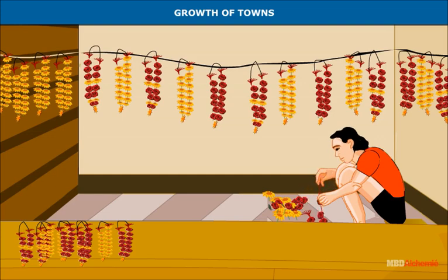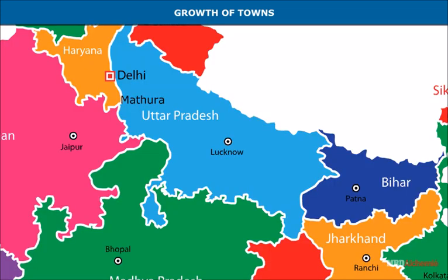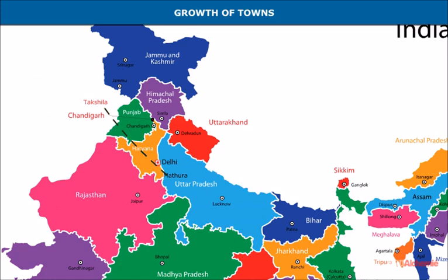Mathura also prospered because of its central location and as a center of sculpture, craft — goldsmiths, blacksmiths, weavers, garland makers, etc. — and religion. Most Kushana towns existed on the Uttarapatha route from Mathura to Takshila. The security and encouragement given by the Kushana empire boosted commerce and trade even more.